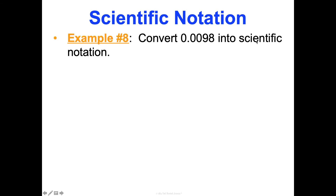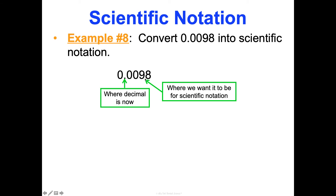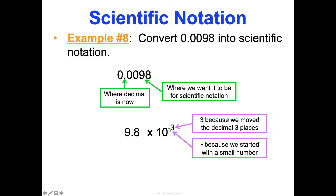Let's convert 0.0098 into scientific notation. The decimal is currently at the front. In scientific notation, we want it just after the first significant digit — so we want 9.8 × 10 to some power. We count how many places we move the decimal: one, two, three. It's negative because we started with a tiny number — less than one. Final answer: 9.8 × 10⁻³. We started with two sig figs, and we end with two sig figs, since none of the placeholder zeros are significant.